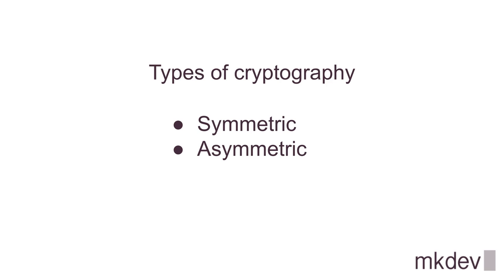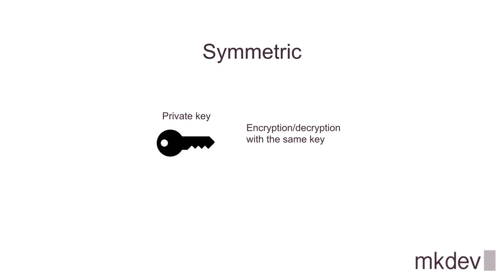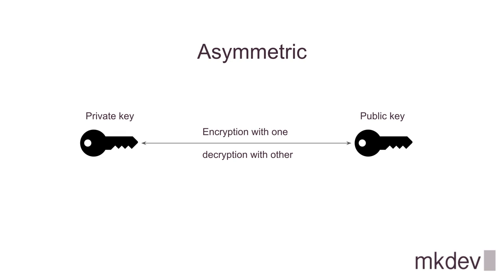Some preparation is required before starting the main topic. You must grasp the main ideas of how cryptography works. There are two cryptography types: asymmetric and symmetric. The main difference between them is how they work with keys. The symmetric one uses the same key for encryption and decryption, whereas asymmetric uses one key called public for encryption and another one called private for decryption, or vice versa.